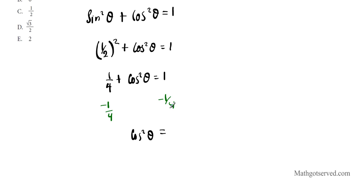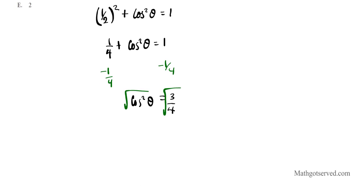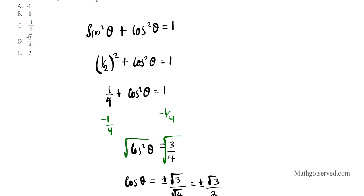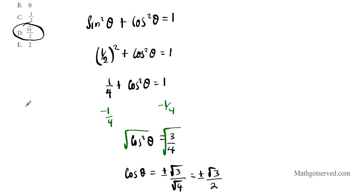Subtract 1 fourth from both sides and we'll get cosine squared theta. 1 is the same thing as 4 over 4. So 4 over 4 minus 1 over 4 is 3 fourths. To get cosine by itself I need to get rid of the square. So I take the square root of both sides. We're going to have cosine theta equals plus or minus the square root of 3 divided by square root of 4, which equals plus or minus root 3 over 2. We have just a plus option here which is sufficient. So our answer is option D.